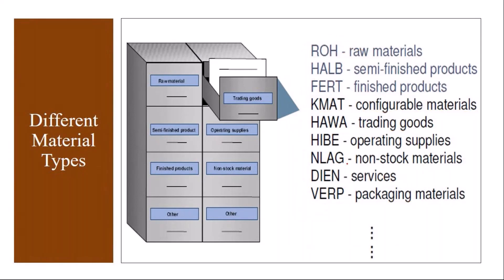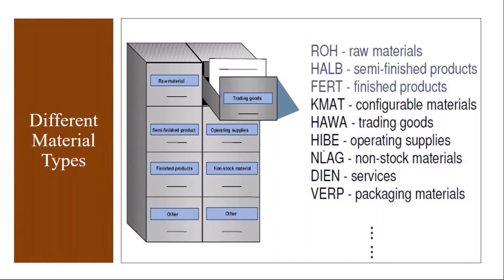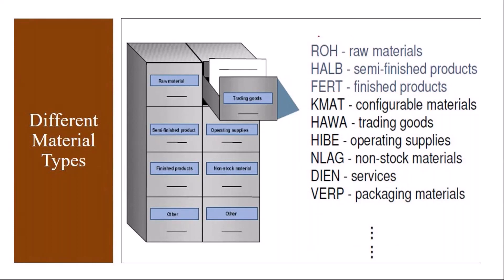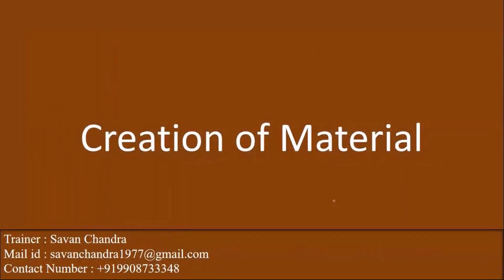In the CS module, we will predominantly use FERT because we first produce the product and then sell it to the customer. We also use DIEN for services. Spare parts and machine spare parts are sometimes created with operating supplies material type, but that is handled by the MM team. These are all standard SAP material types; custom material types can be created but that is the responsibility of the MM team.